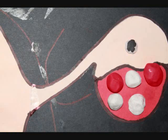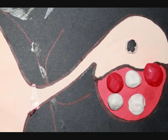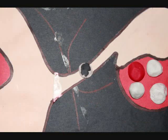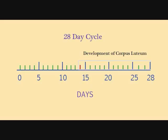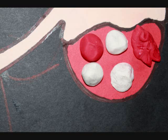This immature egg enters an oviduct where it may become fertilized by a sperm cell and complete meiosis. The follicle cells that are left behind develop into a small mass of endocrine tissue called the corpus luteum. The corpus luteum remains in the ovary for two weeks, secreting the hormones estrogen and progesterone.